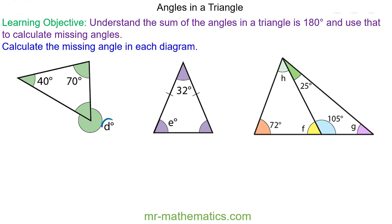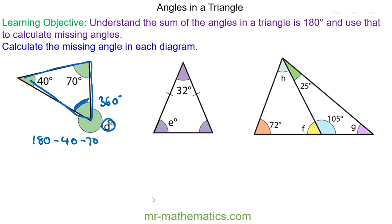Okay, so to work out angle D we need to work out this angle first, and then we know that the two angles will add to make 360 degrees because they are angles about a point. So to work out this angle we have 180 take away 40 take away 70, which are the two angles in the same triangle. So that's going to be 180 take away 110, which is 70 degrees.